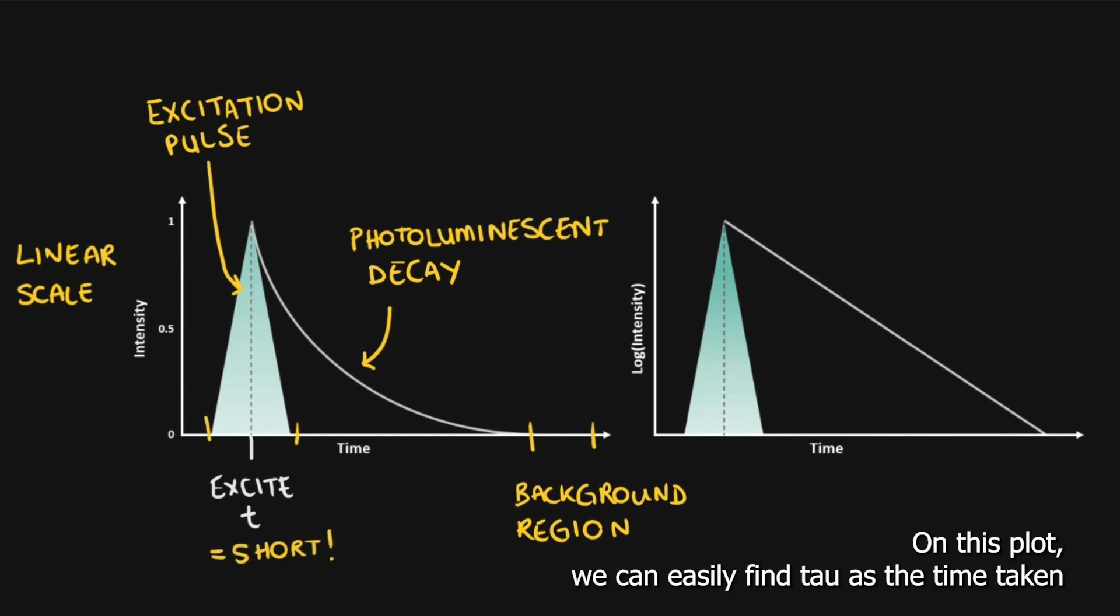On this plot, we can easily find tau as the time taken for the emission intensity to drop to 1 over E of its initial value. In practice, mathematical fitting of the decay is used for more accurate and more complex results.